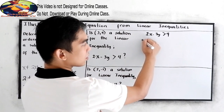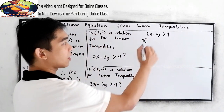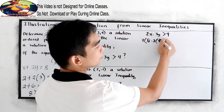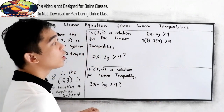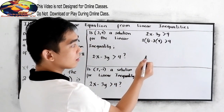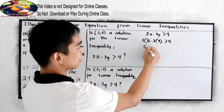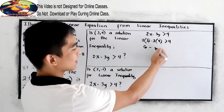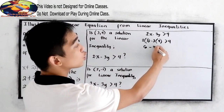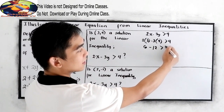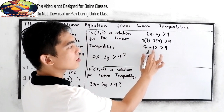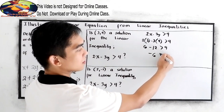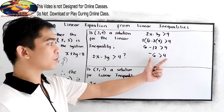Now substitute: 2 times x is 3, minus 3 times y is 4, greater than 4. So 2 times 3 is 6, and negative 3 times 4 is negative 12, giving us 6 minus 12, which is negative 6, greater than 4. Is negative 6 greater than 4?